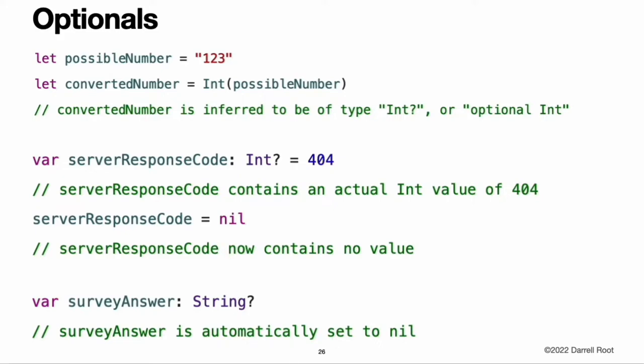Note: Swift's nil is not the same as nil in Objective-C. In Objective-C, nil is a pointer to a non-existent object. In Swift, nil is not a pointer — it is the absence of a value of a certain type. Optionals of any type can be set to nil, not just object types.